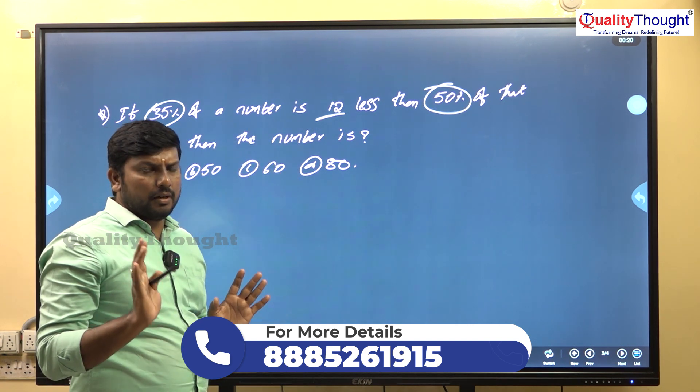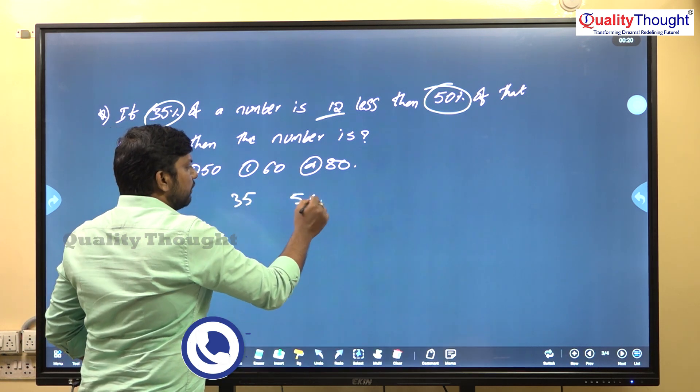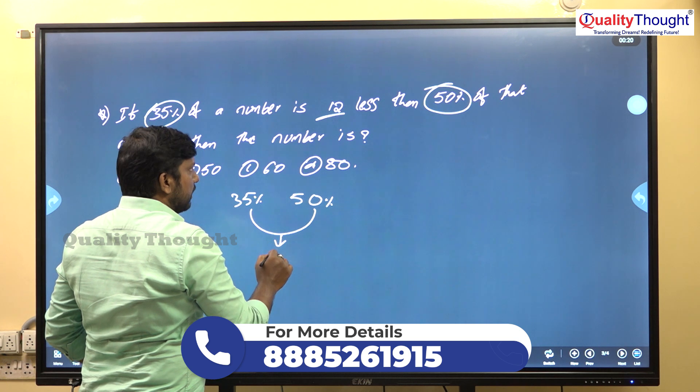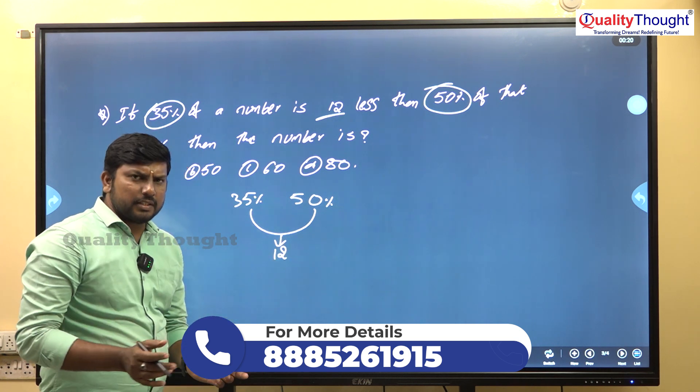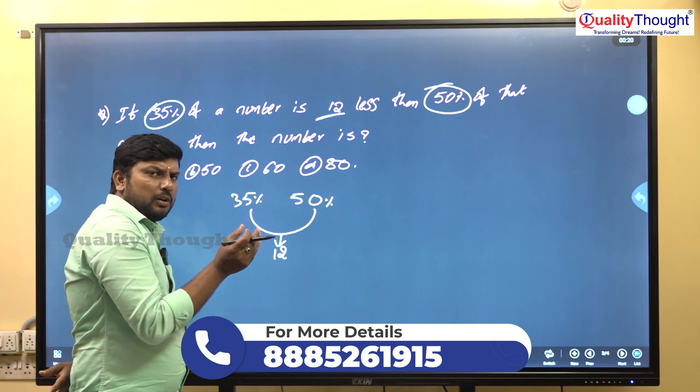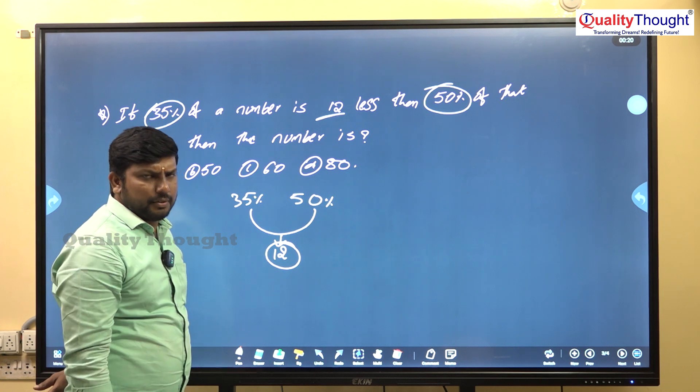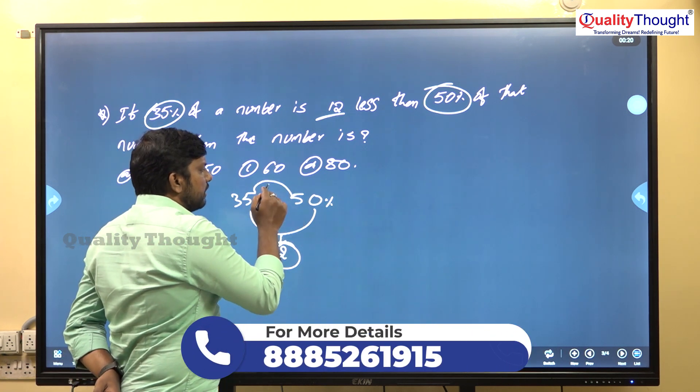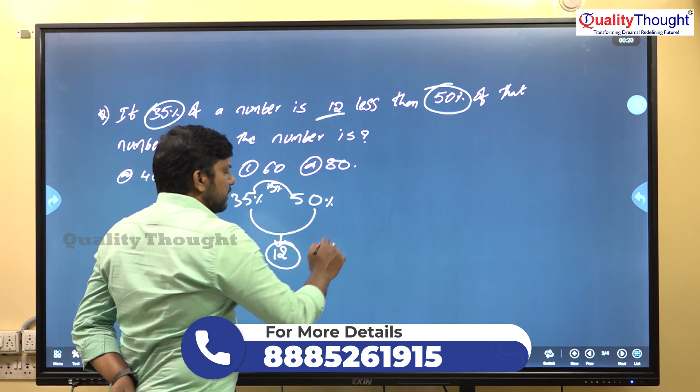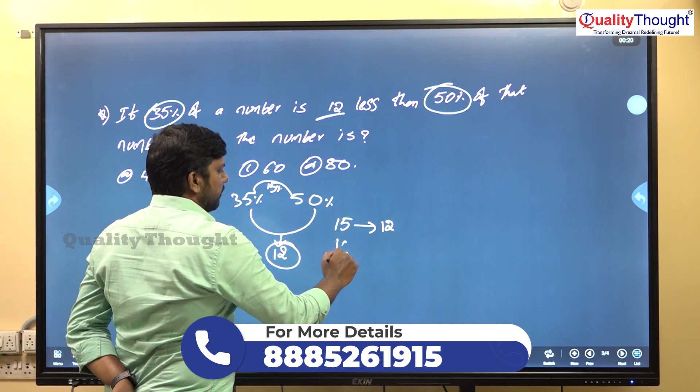If 35 percent of a number and 50 percent of a number, the difference between 35 percent and 50 percent is 12. The percentage difference is 15 percent. 35 plus 15 is 50. So 15 percent of that number is 12 rupees. Then 100 percent of that number will be?